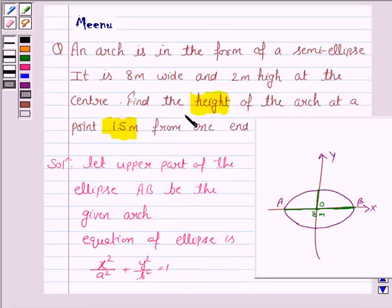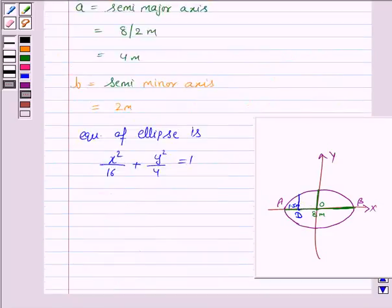Now we have to find the height of the point 1.5 meter from one of the ends. So if D is this point which is 1.5 meter from the end point A, then we have to find this height. Let this distance be denoted by D dash, where D dash is any point on the arc.